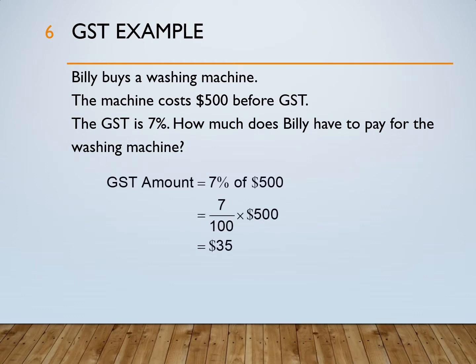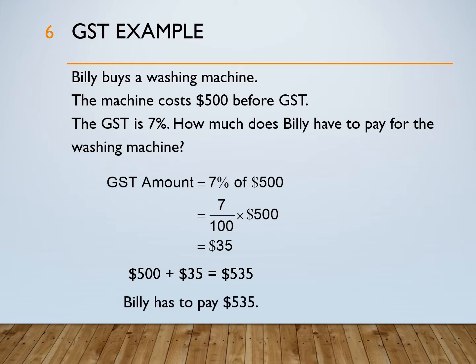So first, we find the GST amount, which is 7% of $500. That is equal to 7 out of 100 times $500, and you get $35. Then, to find how much Billy has to pay, we add $500 and the GST, which is $35, together to get $535. So Billy has to pay $535.